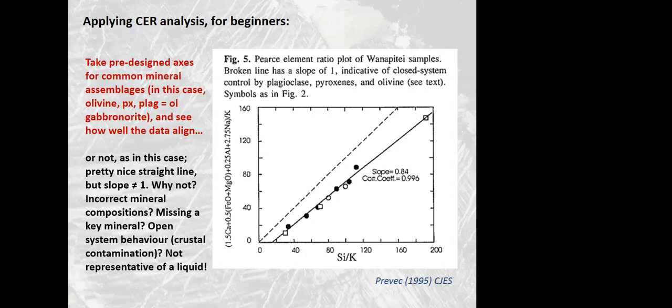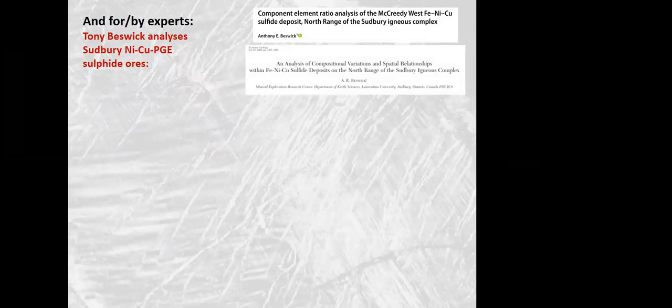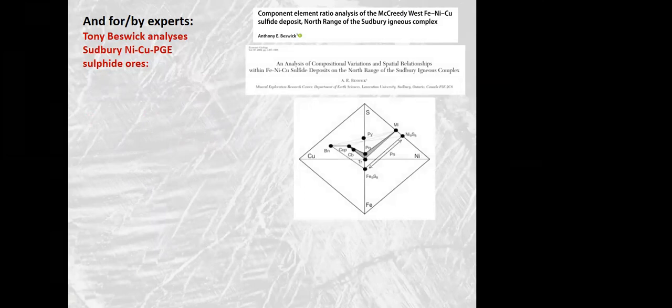It's possible that crustal contamination has sort of broadly just produced a mixing line that's superimposed on the Pearce element ratio diagram. And then there's the fact that we aren't looking at the liquid composition anymore necessarily. We're looking at mixtures of liquids and crystals. So we're also seeing a kind of mixing system from that. So it does get more complicated with intrusive systems, but it's still useful. And the main proponent in my world of this type of modeling is Tony Beswick at Laurentian University in Sudbury in Canada. And he's been a major proponent of this for probably the last three decades. He's still producing new research on this, presumably sort of post retirement.